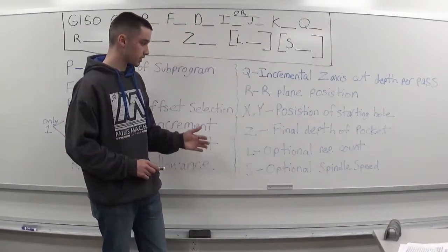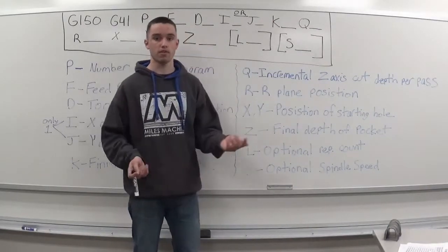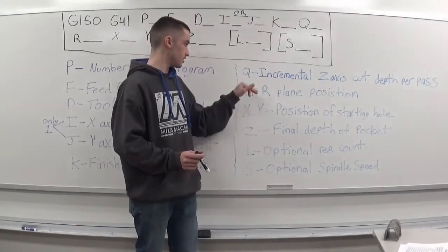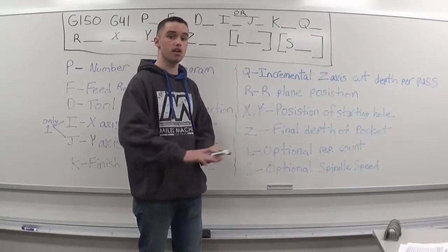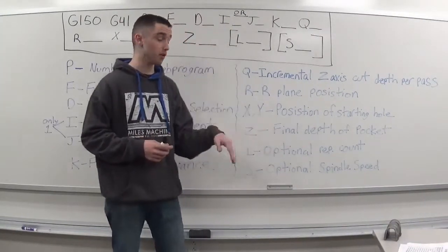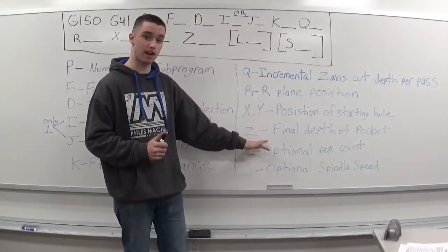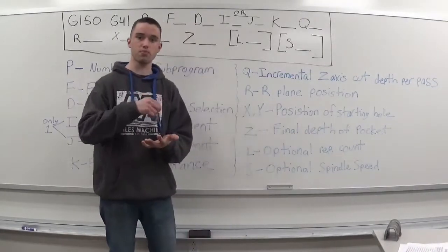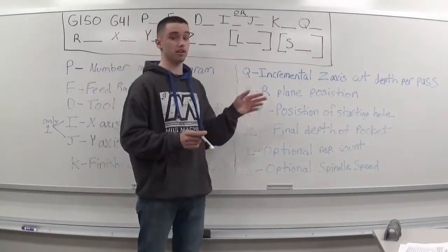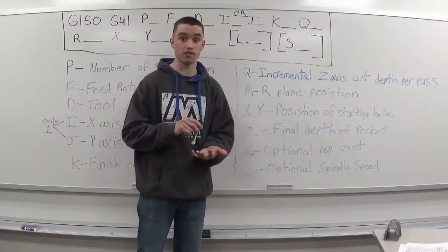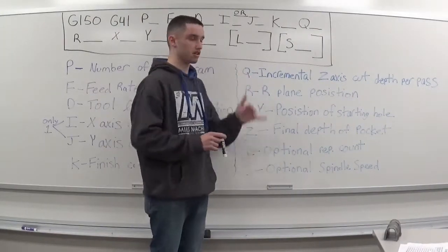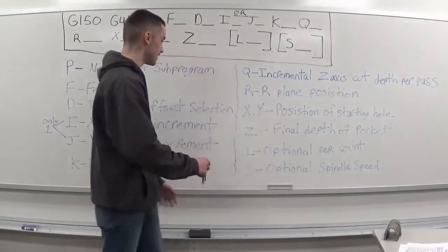Really quick with your Q and your Z, let's say I made the final depth of my pocket 500 thousandths and I made my Q 100 thousandths. It's going to take five passes to get to my final depth, taking 100 thou every time it goes around. But now let's say I made my Q value 200 thousandths and I still keep my Z depth at 500 thousandths. Its first two cuts will take the Q value of 200 thousandths, but its last cut will take 100 thousandths. The first two cuts will get you down to 400 thousandths in depth, and the last cut will take 100 thousandths to get down to your final Z depth. You don't have to worry about the machine not knowing that its final cut isn't going to be your Q value. The machine is smart, remember that.